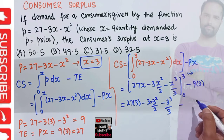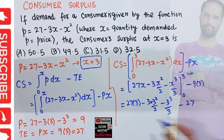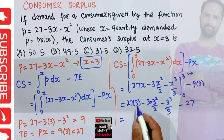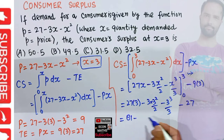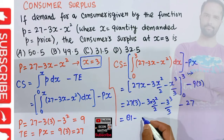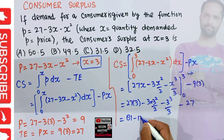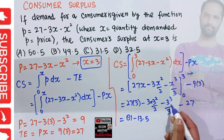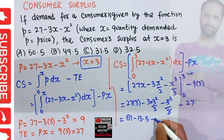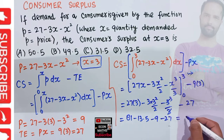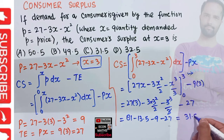Then we subtract total expenditure, which is 9 times 3 equals 27. Solving: 27 times 3 is 81, minus 3 times 9 over 2 which is 13.5, minus 9, minus 27. This gives us 31.5, which is our consumer surplus.